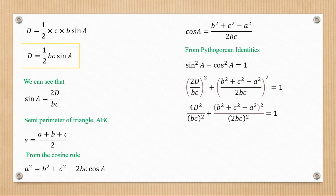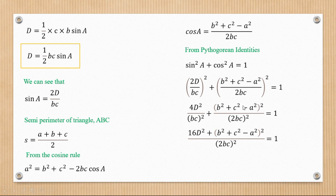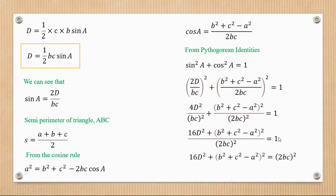Inserting the squares, we get 4D² over (bc)² for the sin²(A) term. Setting the LCD as (2bc)², we find that 2² squared gives 4 and 4 times 4 is 16, so we end up with 16D² on one side. After cross-multiplying, we obtain an expression that sets up a difference of two squares.